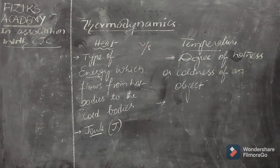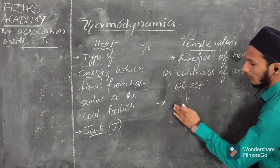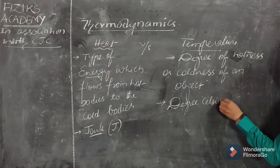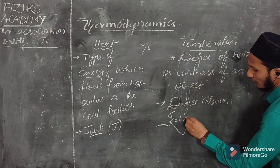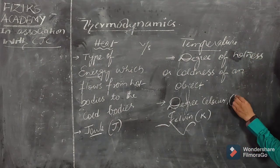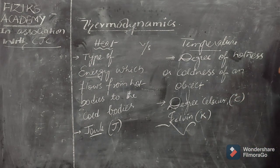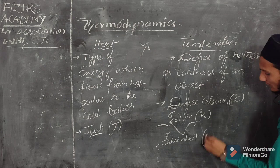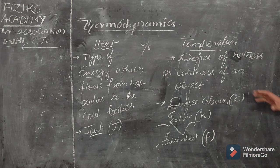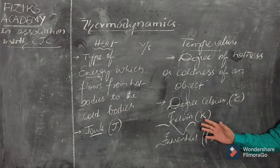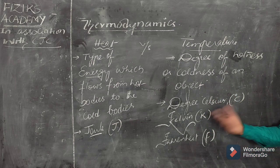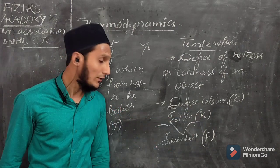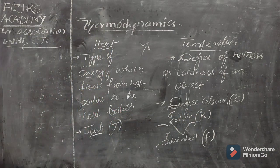There are several units for the measurement of temperature. The most common unit is degree Celsius. The second unit is Kelvin, with symbol K. You can also write degree Kelvin. Apart from these two, there is another unit called Fahrenheit, indicated by capital F. We will also see the relation between all three: the relation between degree Celsius and Kelvin, between Kelvin and Fahrenheit, and between Fahrenheit and Celsius.